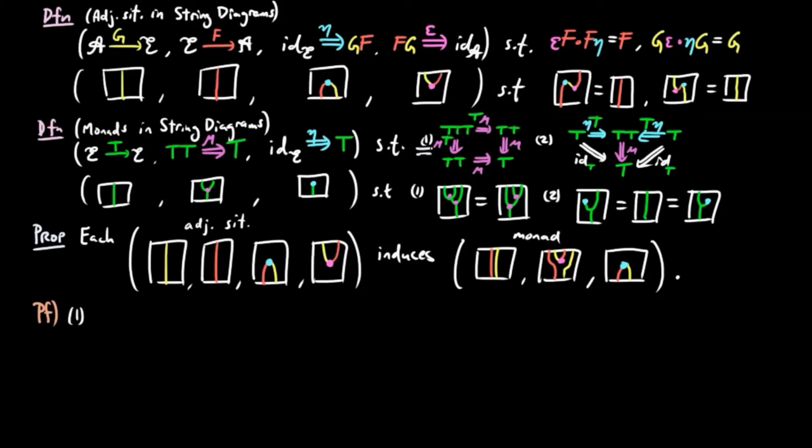The associative law for multiplication follows by naturality, as can be seen by the lowering and raising of the co-unit pink dot in the diagrams.